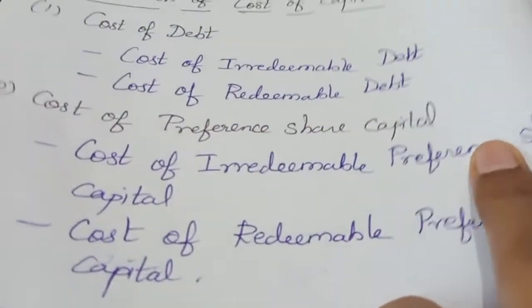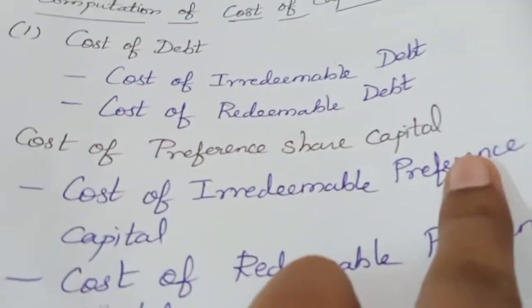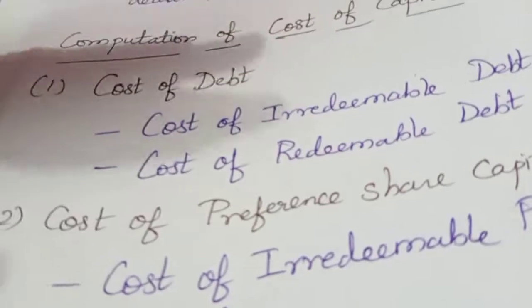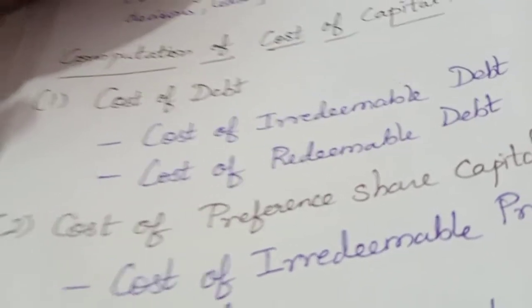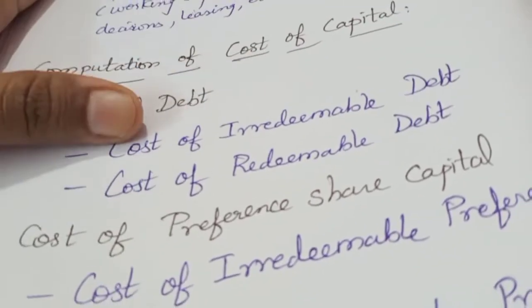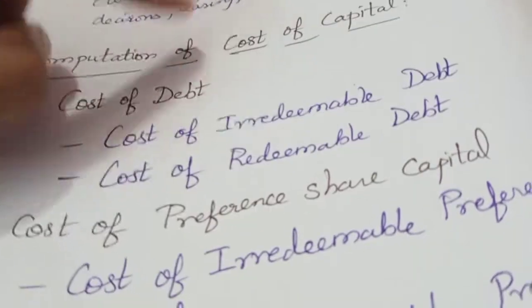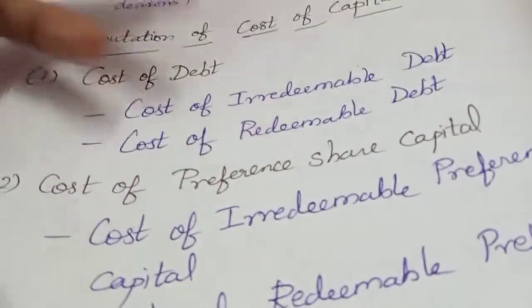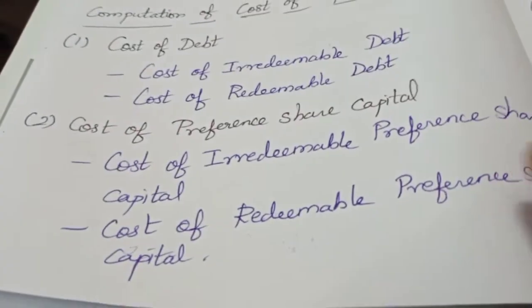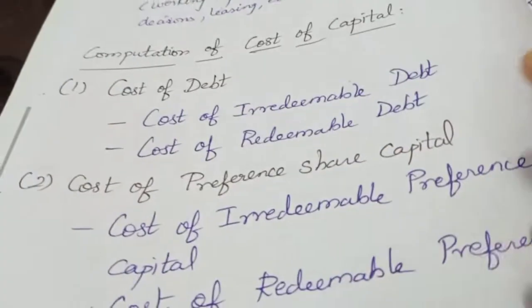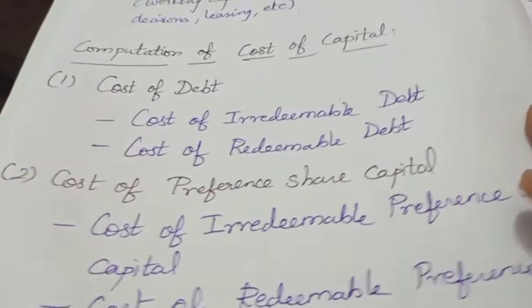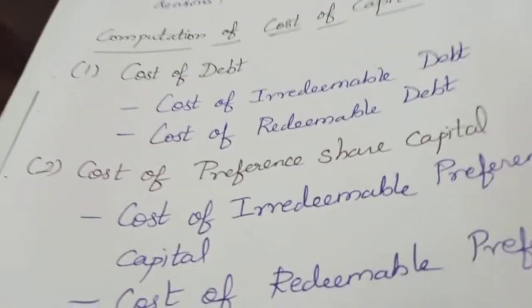Cost of preference share capital: preference shareholders are paid dividends. One company pays first priority to preference shareholders. Depending on claim holders — profit or loss — interest is paid first. Even at the time of winding up, preference shareholders settle their claims first before equity shareholders.